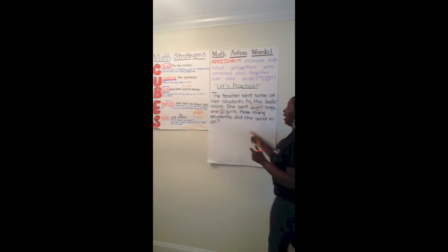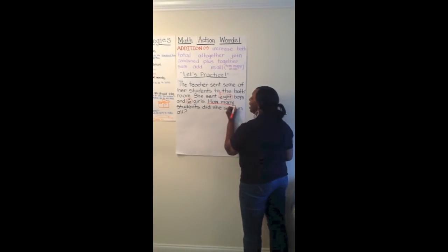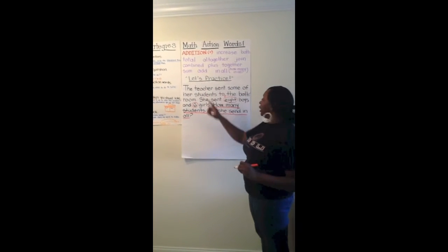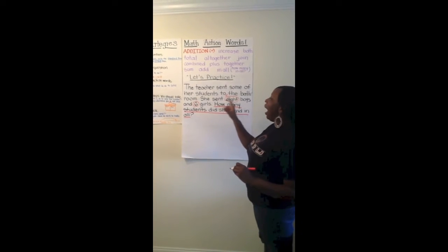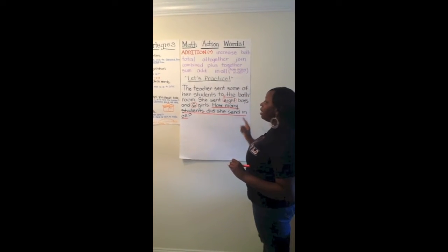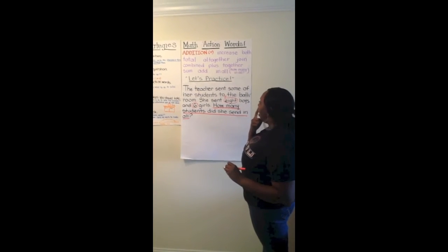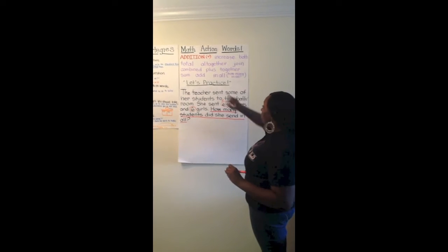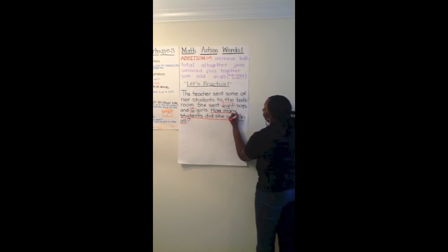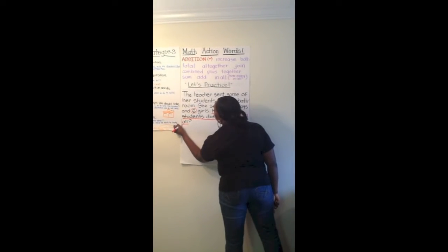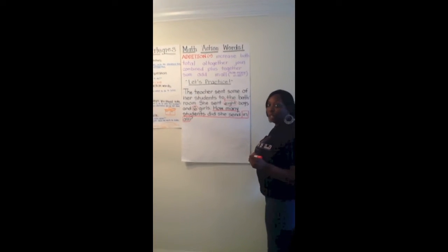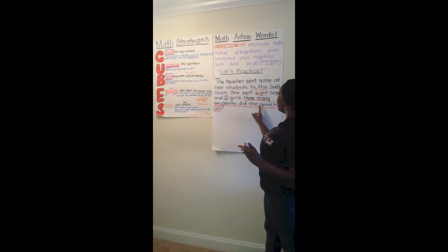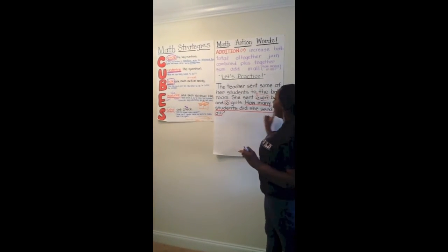Now it's time to underline the question. You find the question at the end. Let's underline it and say it together: 'How many students did she send in all?' We've circled the key numbers 8 and 6, and underlined the question. Now it's time to box any action words. Did you see any? In all — very good! We put a box around 'in all' because it gives us a clue: we're going to be adding.